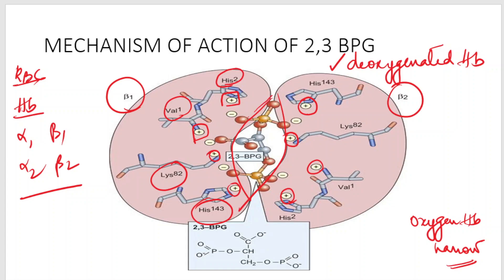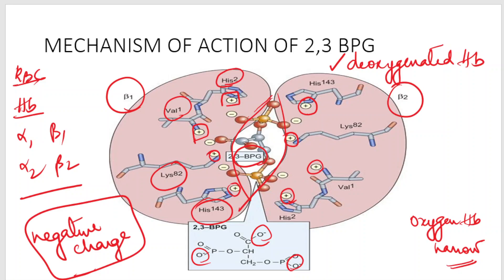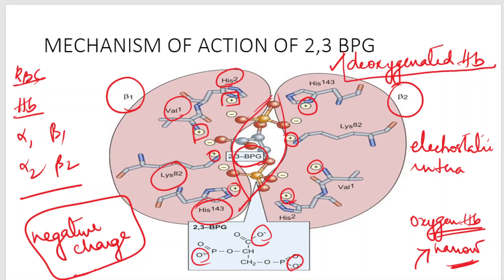2,3-bisphosphoglycerate is a negative allosteric modifier — it carries a negative charge. This negative charge gets accommodated in the cleft between the globin chains via electrostatic interaction. In oxygenated hemoglobin the cleft is too narrow, so 2,3-bisphosphoglycerate cannot fit. Only in deoxygenated hemoglobin can it accommodate itself, forming electrostatic interactions with cationic sites — histidine-2, valine-1, lysine-82, and histidine-143.